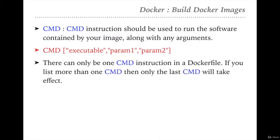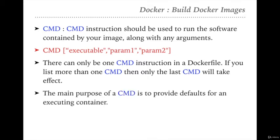There can be only one CMD instruction in a Dockerfile. Just like FROM is the first instruction, CMD is typically the last instruction in the Dockerfile. If there are two CMD instructions, then only the last one will take effect. The main purpose of CMD is to provide the defaults for an executing container — defining commands that will run the application with default parameters. If hardware parameters are required, they can be defined inside CMD or requested from the user.